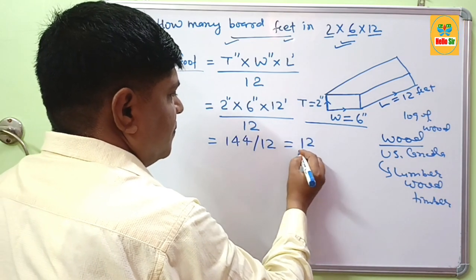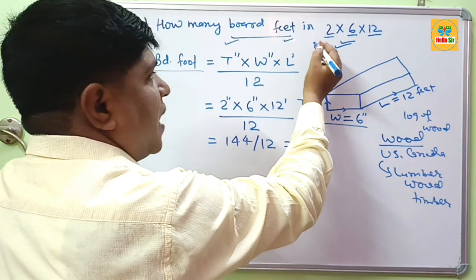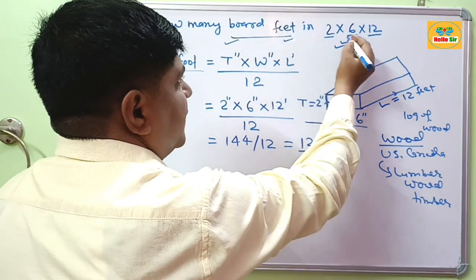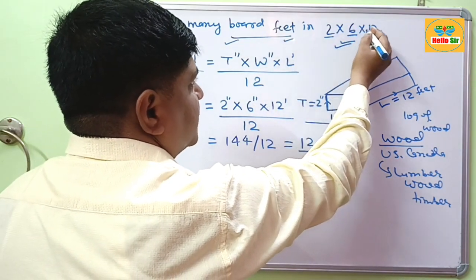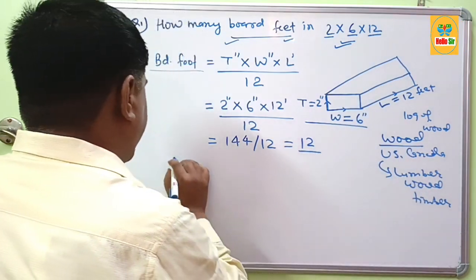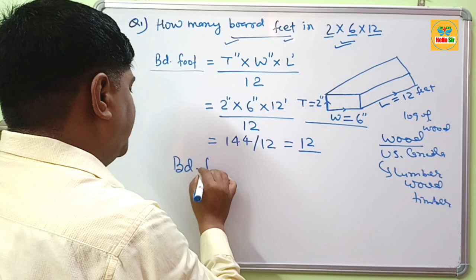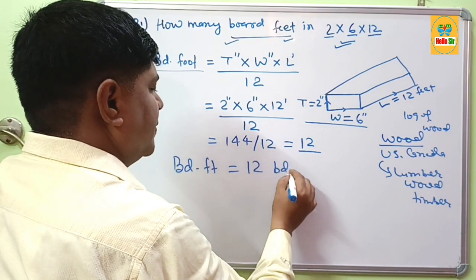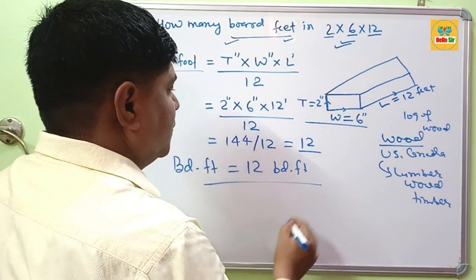This will come about 12. And if your question is how many board feet in 2 by 6 by 12 lumber dimension, your answer is board foot equals 12 bd.ft. And this is your answer.